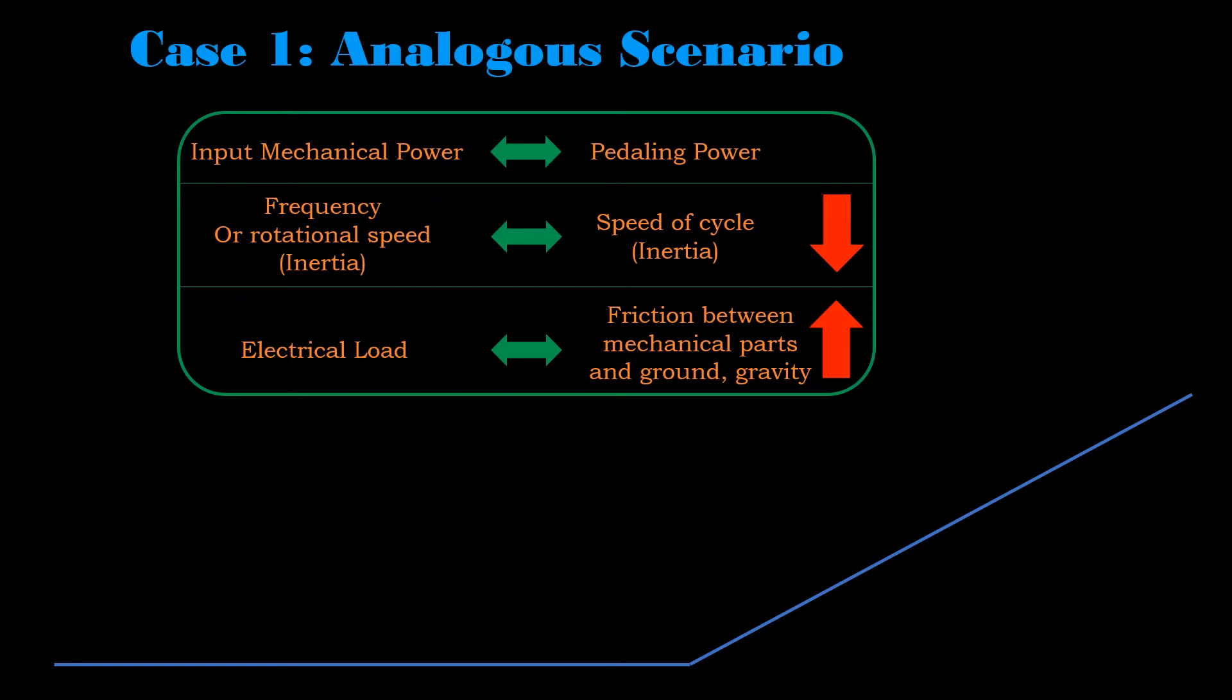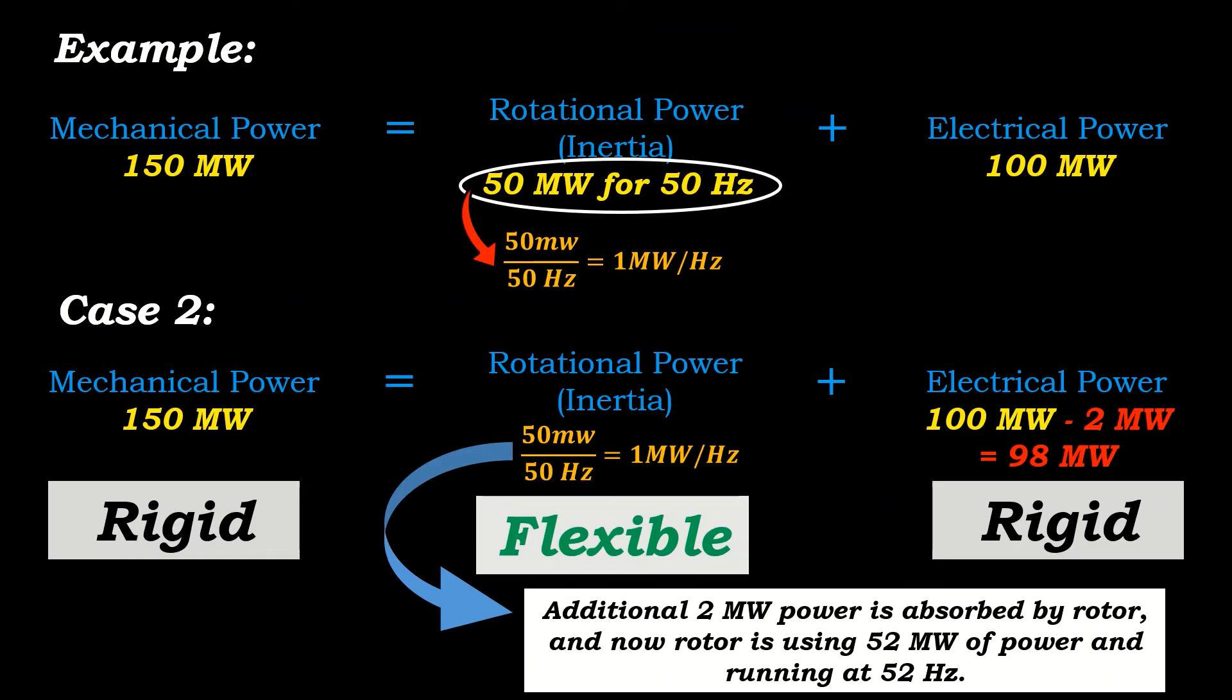Similarly, consider Case 2 where the load demand decreases by 2 megawatts. Again, the constant power load being a rigid entity will only consume 98 megawatts, and the system is left with extra 2 megawatts power. The generator is also rigid and cannot change its mechanical input instantaneously.